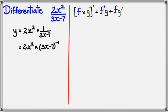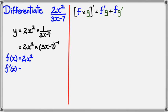Now, I know that the product rule is f-dash times g plus f times g-dash. So I've changed a fraction into two functions that form a product. First, f of x is 2x squared, so f-dash of x is 4x.